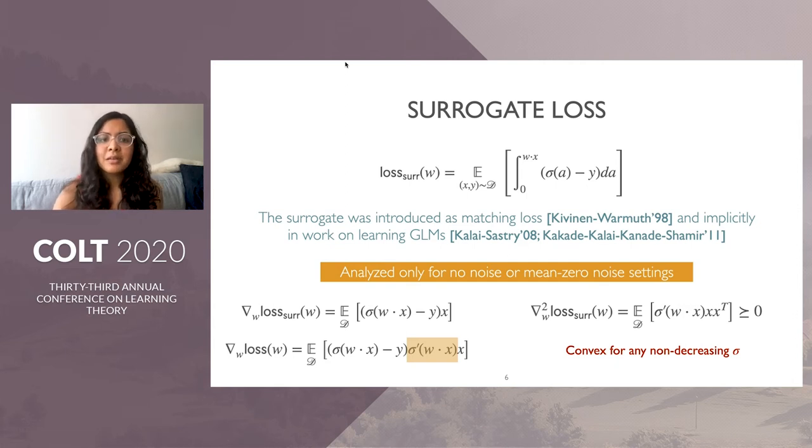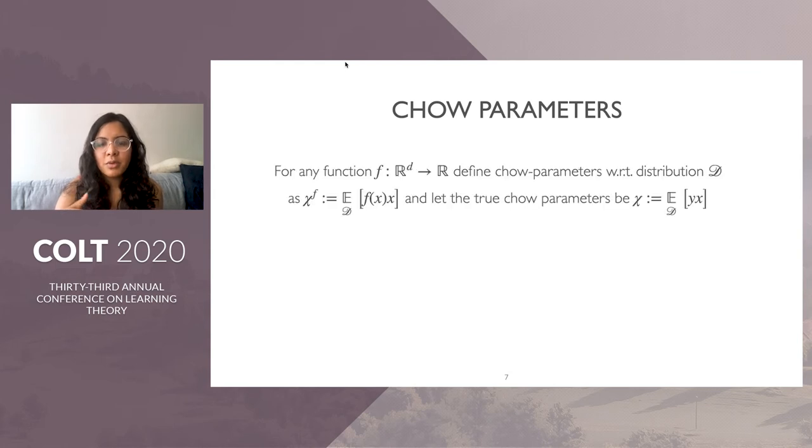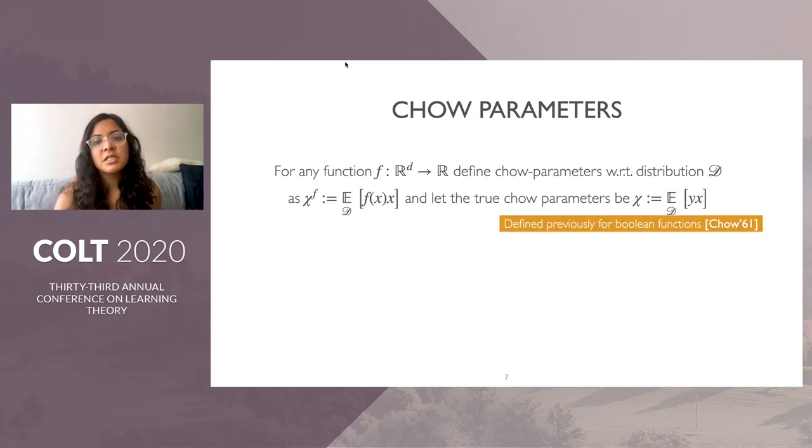What is this loss really capturing? We give an alternate interpretation through Chow parameters. For any function F, we define Chow parameters with respect to distribution D as Chi of F, the expectation of F(X) times X. Chi of F is a D dimensional vector. We also have true Chow parameters, the expectation of Y times X. These have been previously defined for Boolean functions; here we extend them to real valued functions.